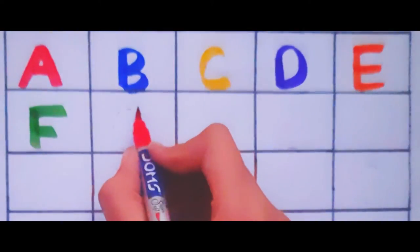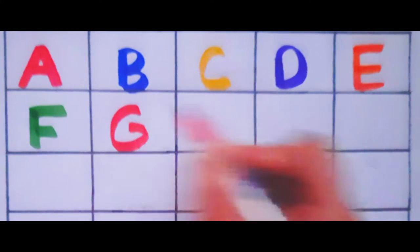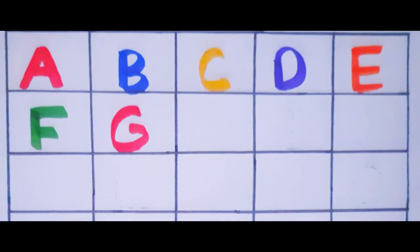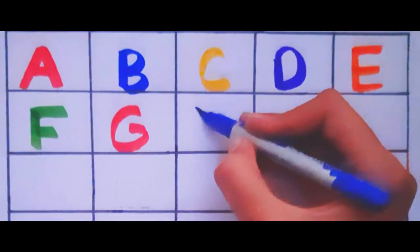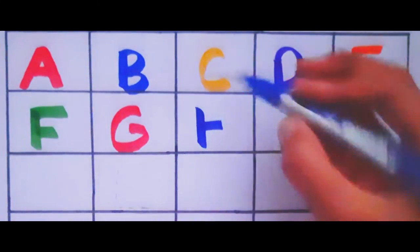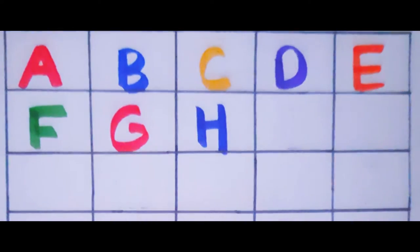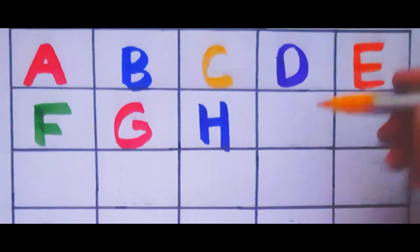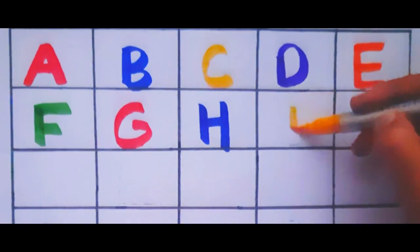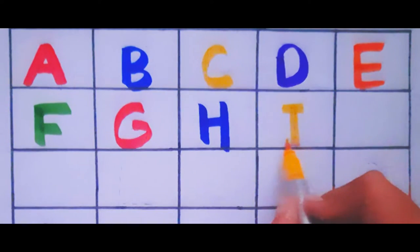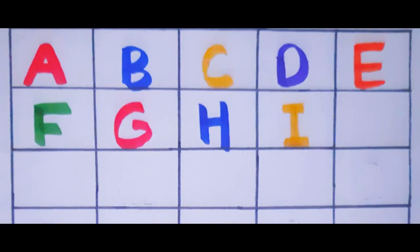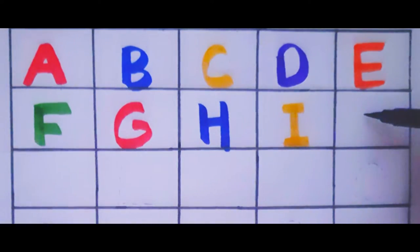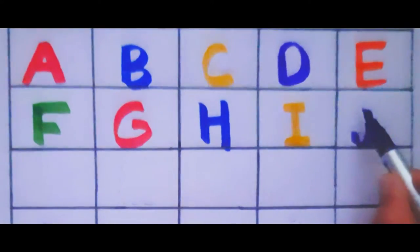F. F for fish. G. G for girl. H. H for house. I. I for igloo. J. J for jug.